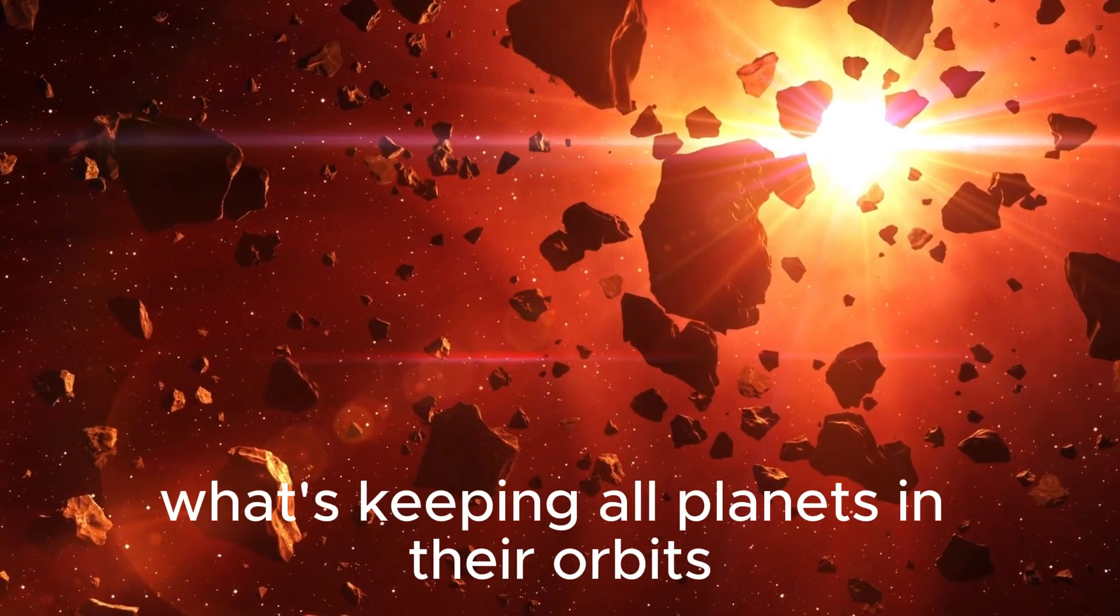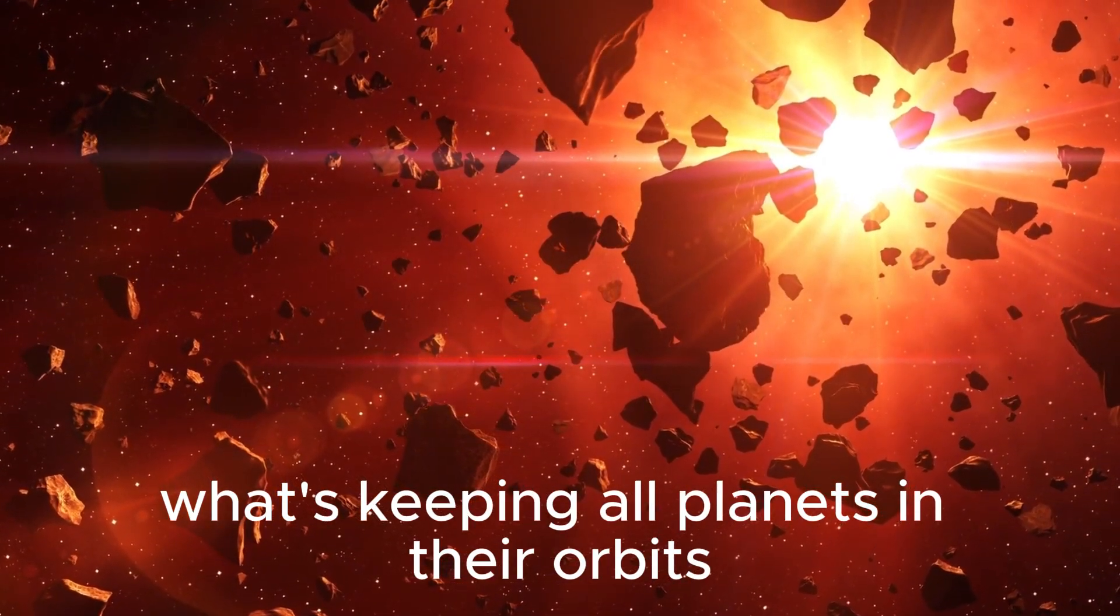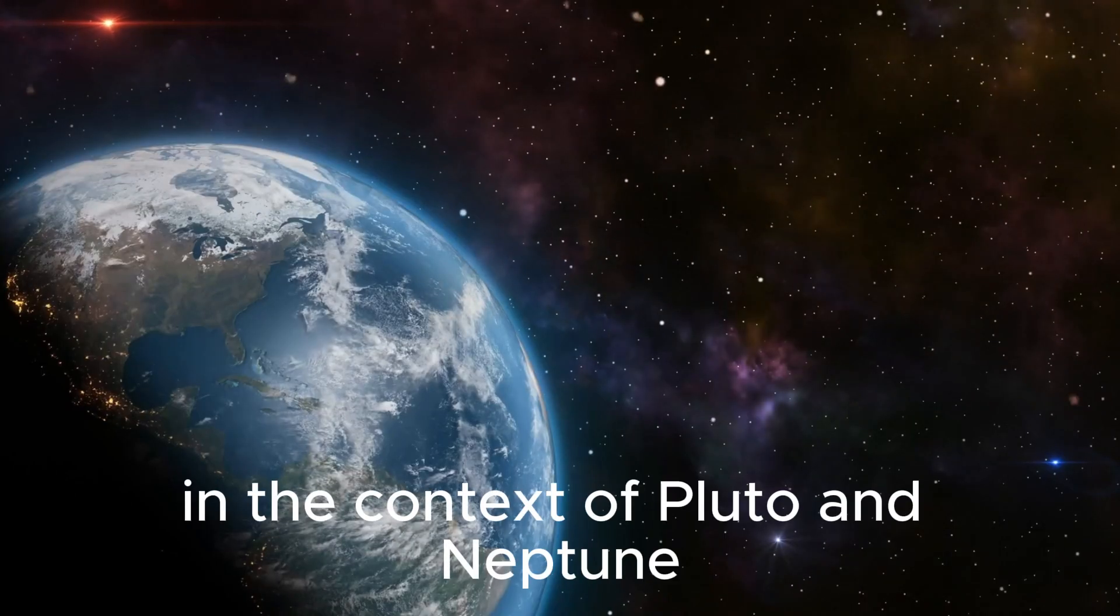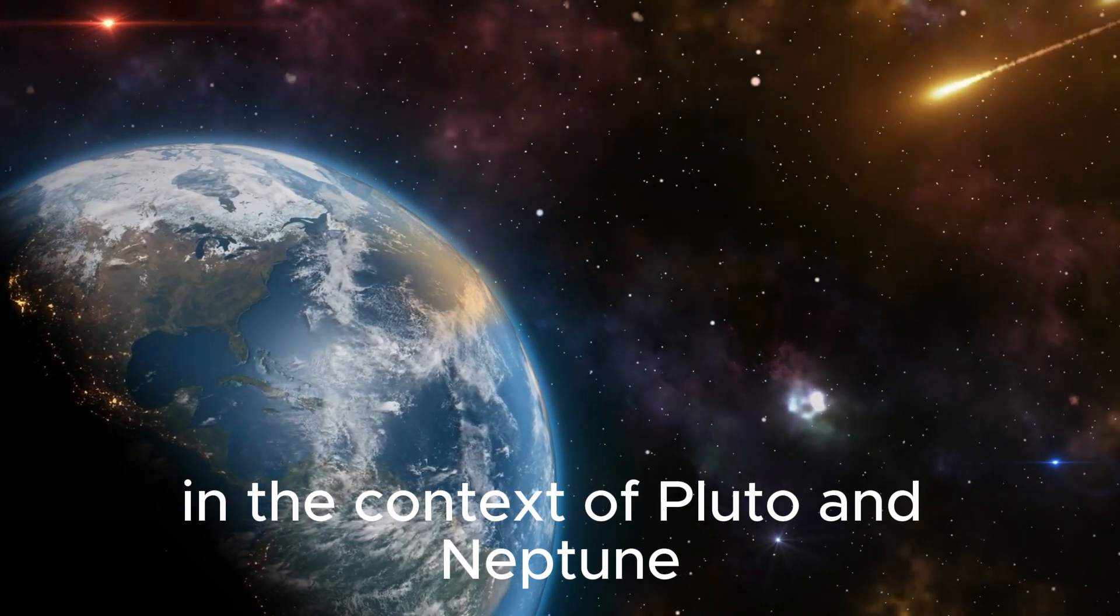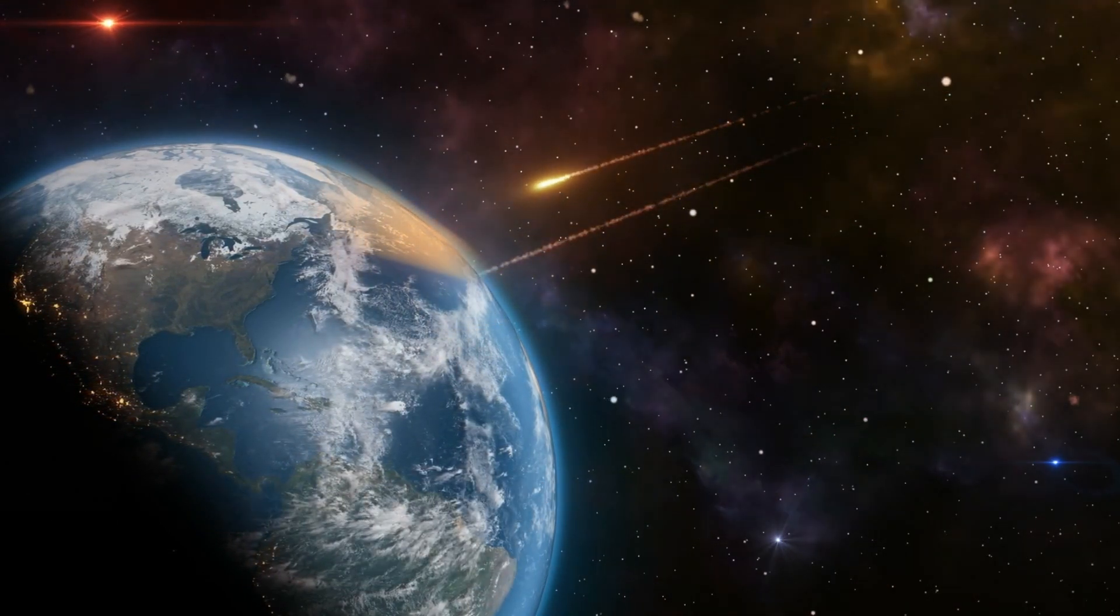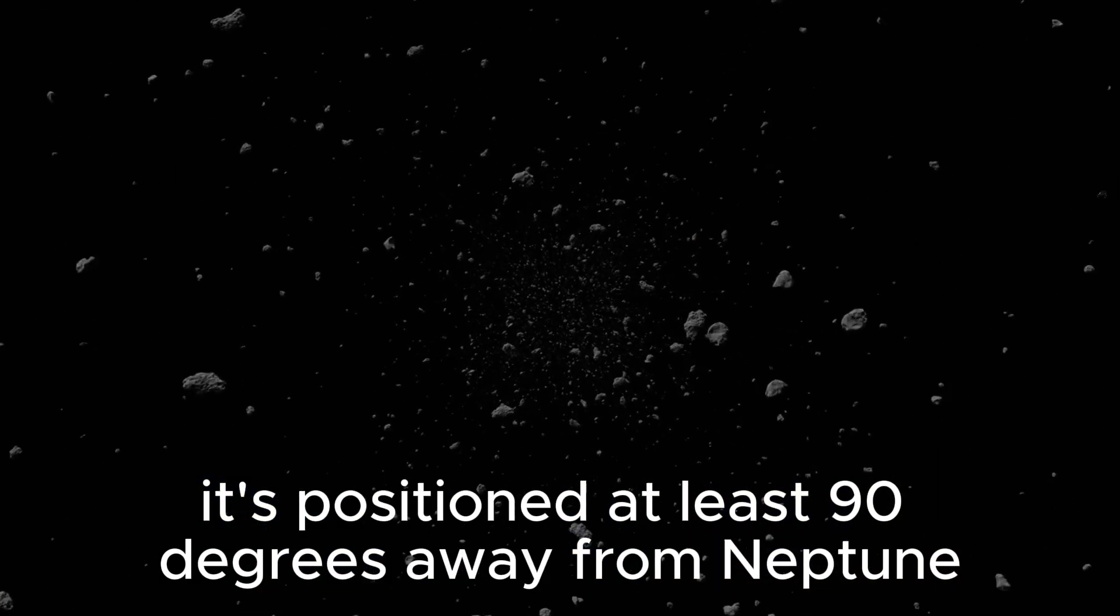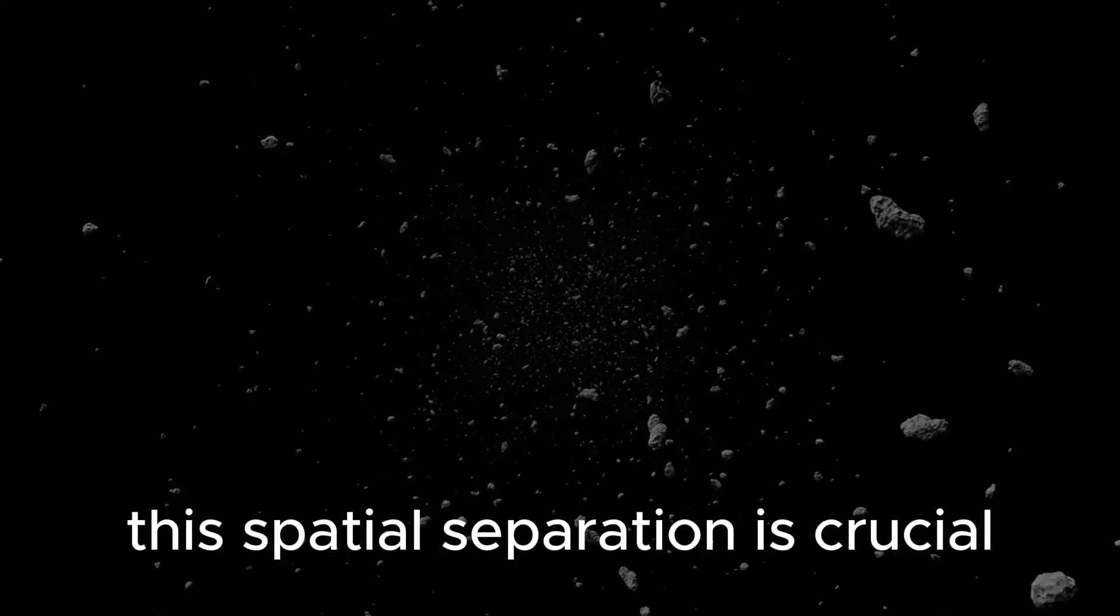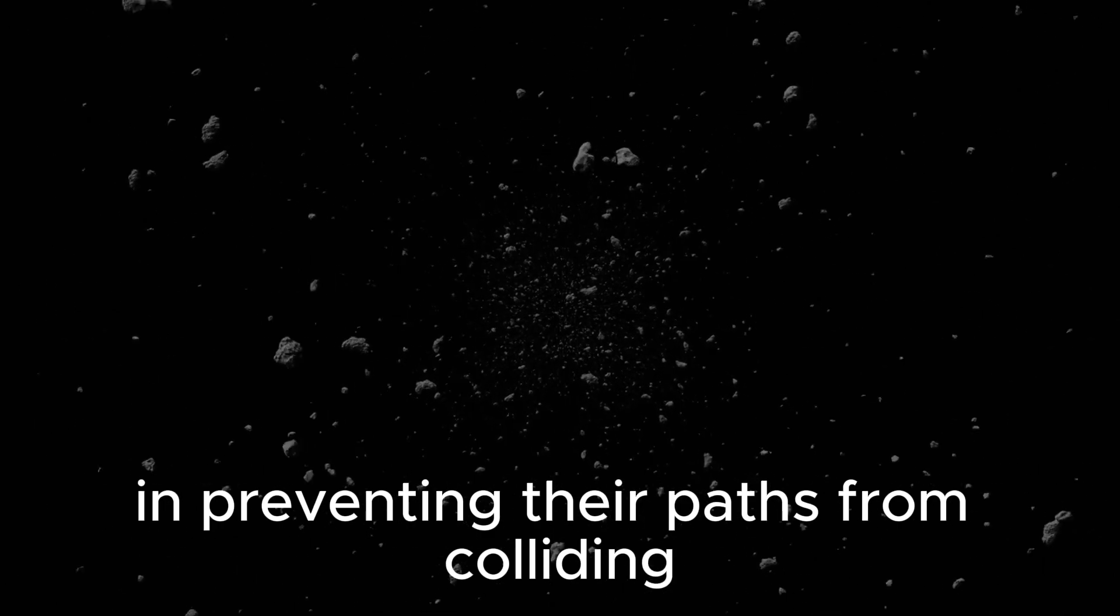According to astrophysicists, what's keeping all planets in their orbits is azimuthal libration. In the context of Pluto and Neptune, this term means that whenever Pluto crosses Neptune's orbit, it's positioned at least 90 degrees away from Neptune. This spatial separation is crucial in preventing their paths from colliding.